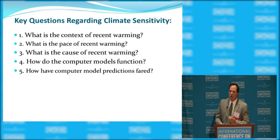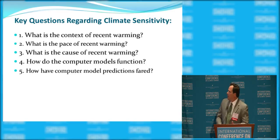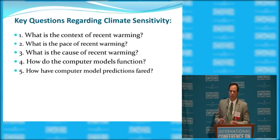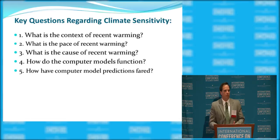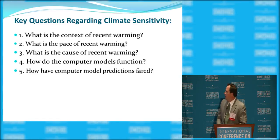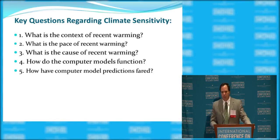Third, what is the cause of recent warming? Fourth, how do the computer models function, because they're predicting so much catastrophic warming in the future, so much acceleration of warming? And finally, how have computer model predictions fared?